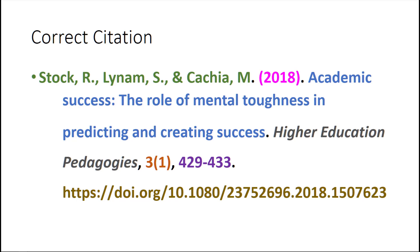Next, in pink, we have the year. For scholarly journals, you only give the year — do not give the day or the month. We have 2018 as our year of publication, inside parentheses. A period goes at the end of the parentheses to indicate that we are done with the date.